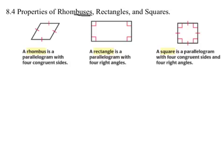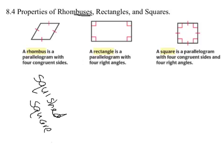What is a rhombus? A rhombus is a parallelogram with four congruent sides. I always thought of a rhombus as a squished square. A rectangle is a parallelogram with four right angles. And a square is a parallelogram with four congruent sides and four right angles.